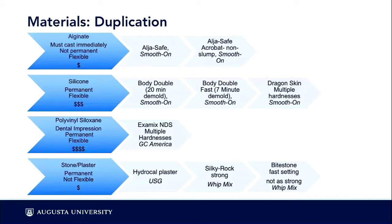Whenever you want to duplicate a structure, alginate is a wonderful material — quick, inexpensive, but non-permanent. Alginate is made from seaweed; it has a pancake batter consistency you can pour over your object and within about 10 minutes have a mold to pour other materials into. I don't recommend it for the face due to its consistency, but alga-safe Acrobat is an alternative that has fiber in it and stays exactly where you put it.